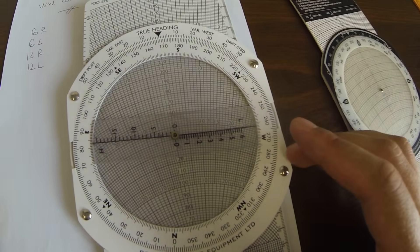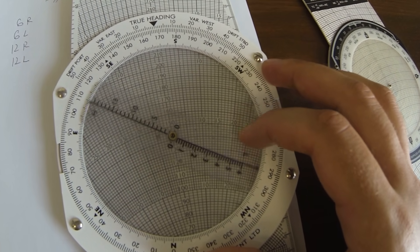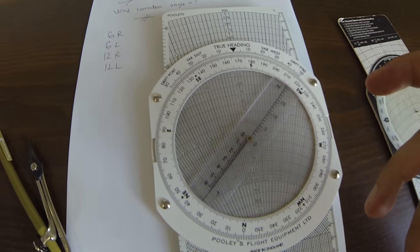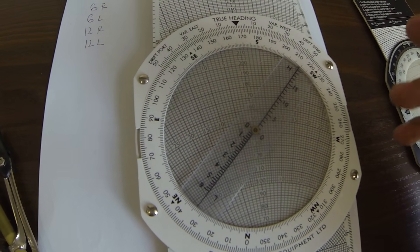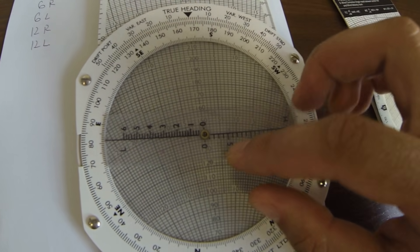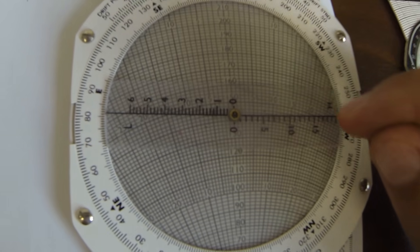So first of all you put the true airspeed. I'm doing like a tutorial for those that haven't used it before, but I'm pretty sure everybody knows this. So this is the center, you have to align this with 120.